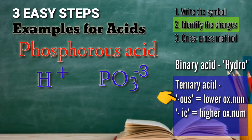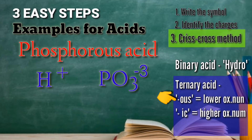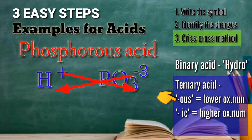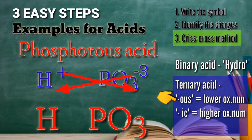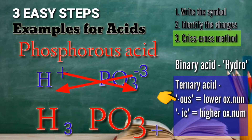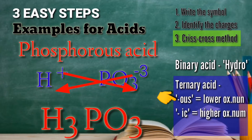PO3 is negative 3. Now we can perform the third step, the criss-cross method — simply exchanging the charges so they become subscripts. Therefore, the positive 3 will become the subscript of hydrogen. Then the positive 1 will be the subscript of our phosphite, or PO3. We remove the signs because they are now subscripts.